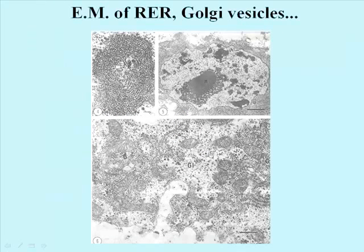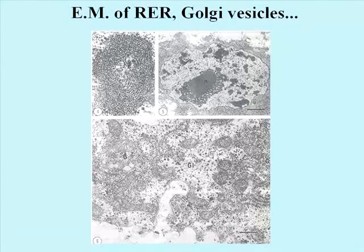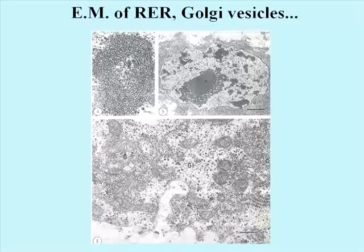The RER can assume a variety of shapes, like the whorled form at the upper left in this slide. The TEM at the upper right shows a nucleus surrounded by lots of RER, and the lower electron micrograph shows RER in the vicinity of Golgi vesicles. The association of RER with Golgi vesicles is related to the fact that proteins synthesized and packaged in the rough endoplasmic reticulum usually travel to the Golgi vesicles for further processing before they reach their final destination.